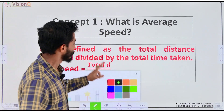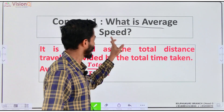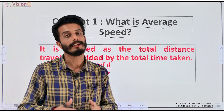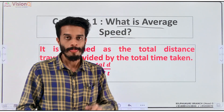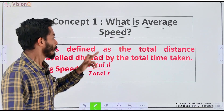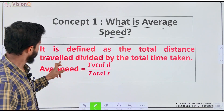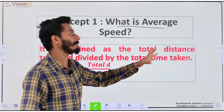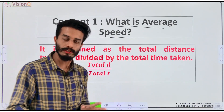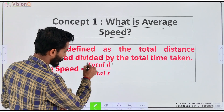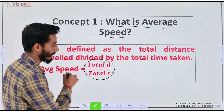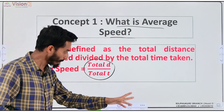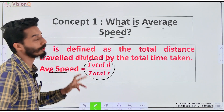What is average speed? Average speed is total distance traveled divided by total time taken. So total distance divided by total time — if I divide total distance by total time, I get average speed.